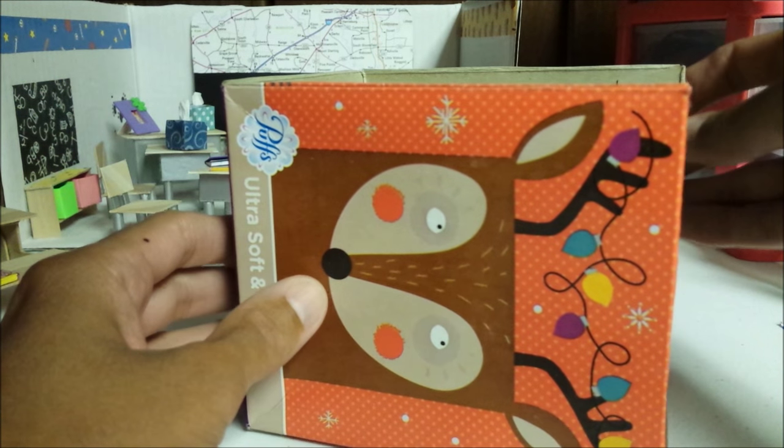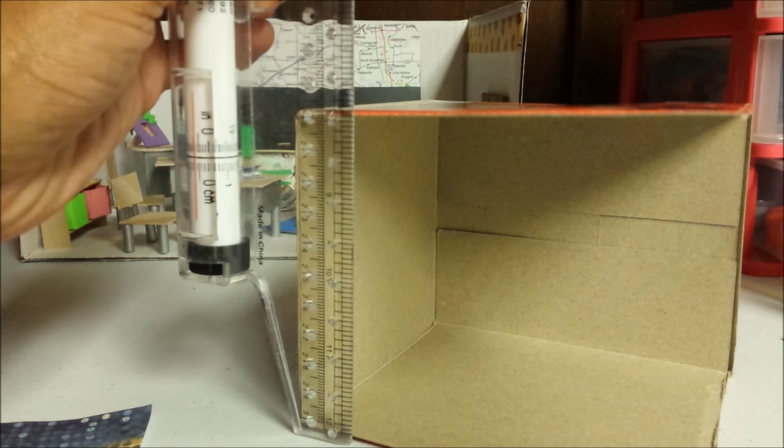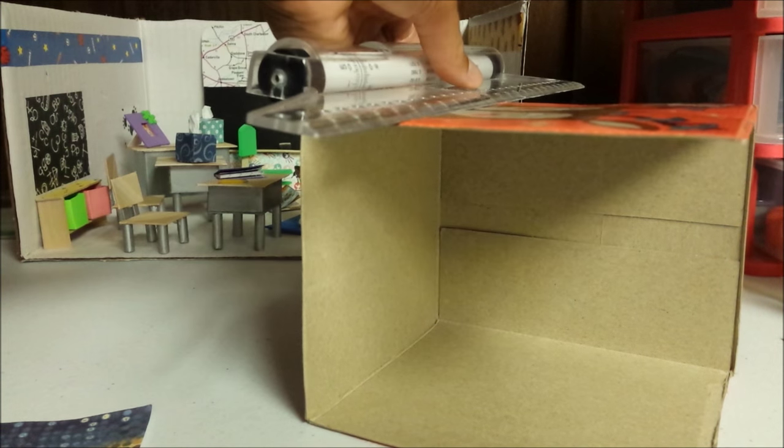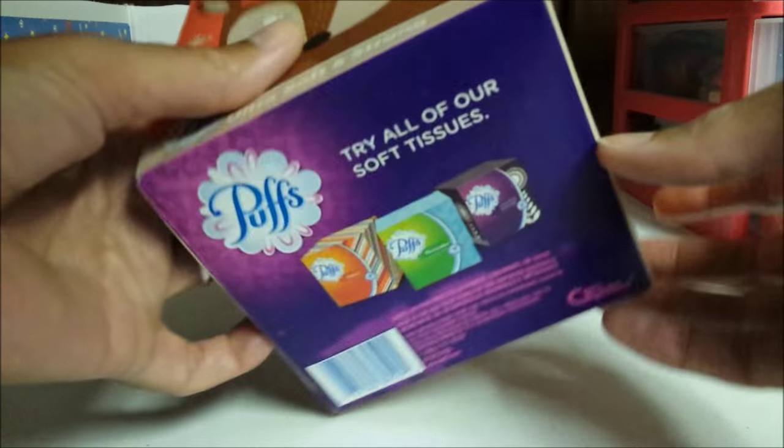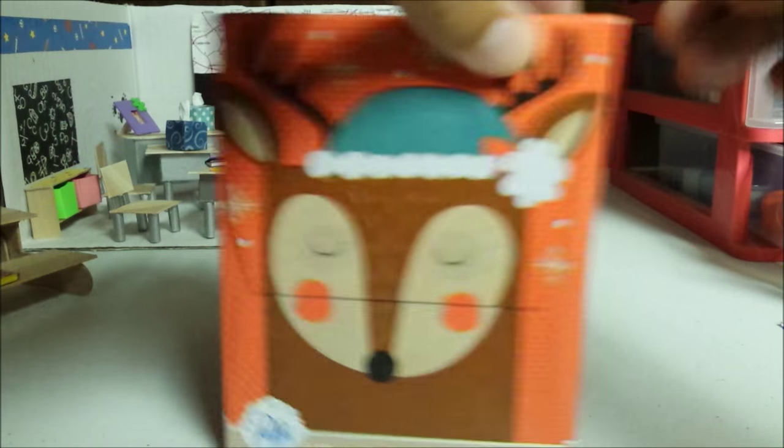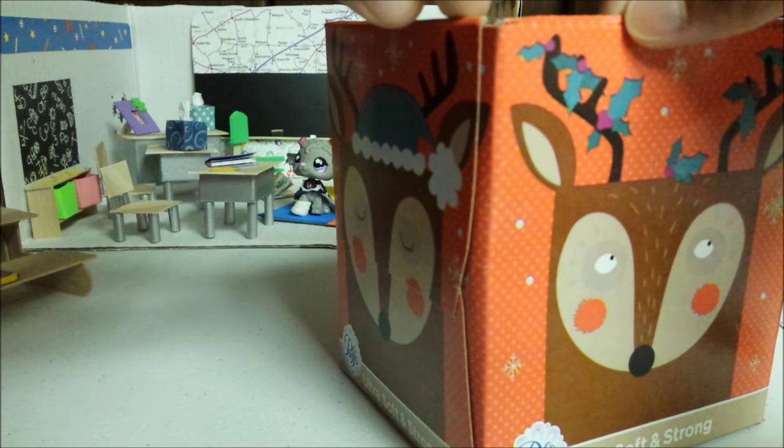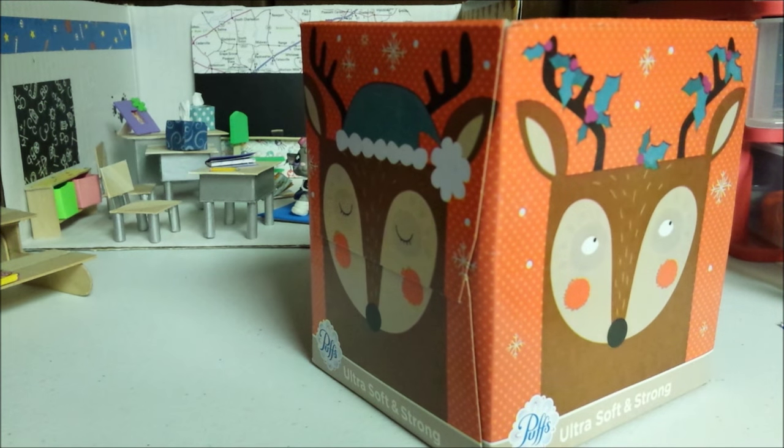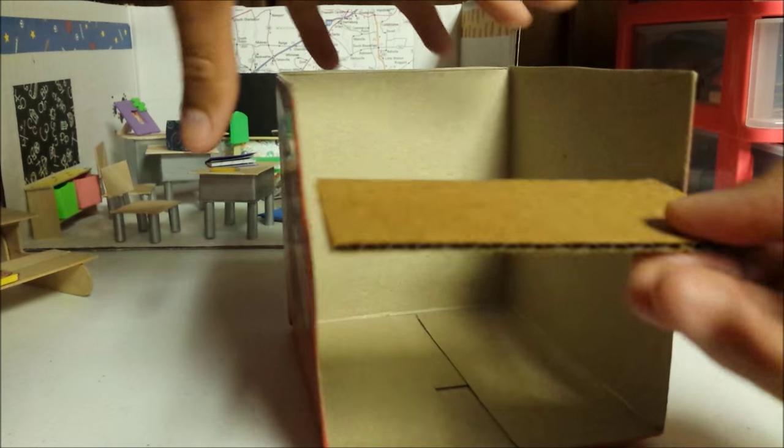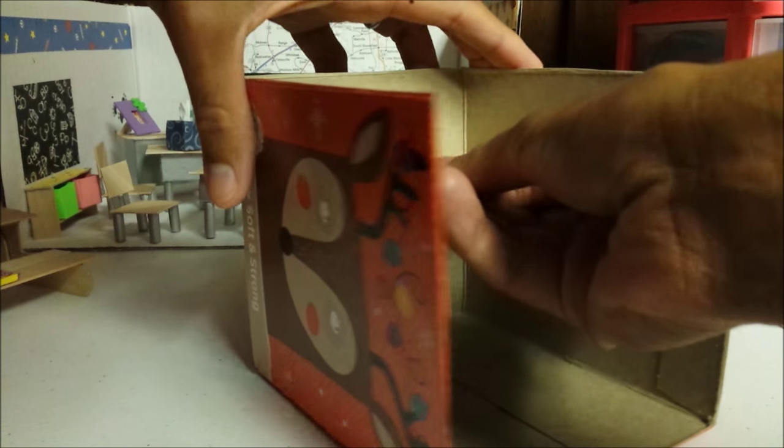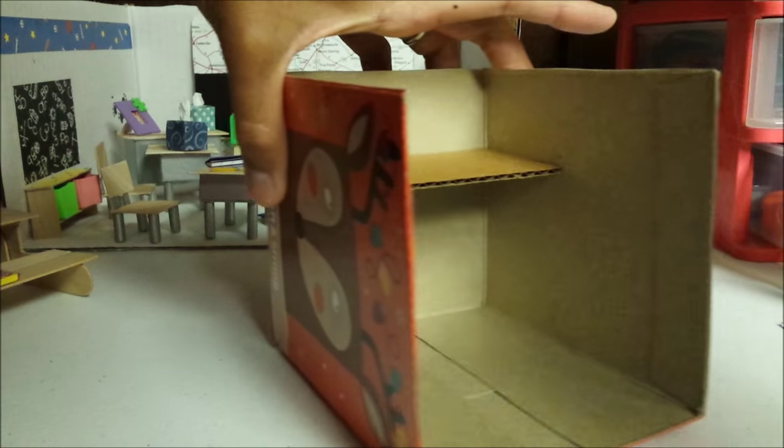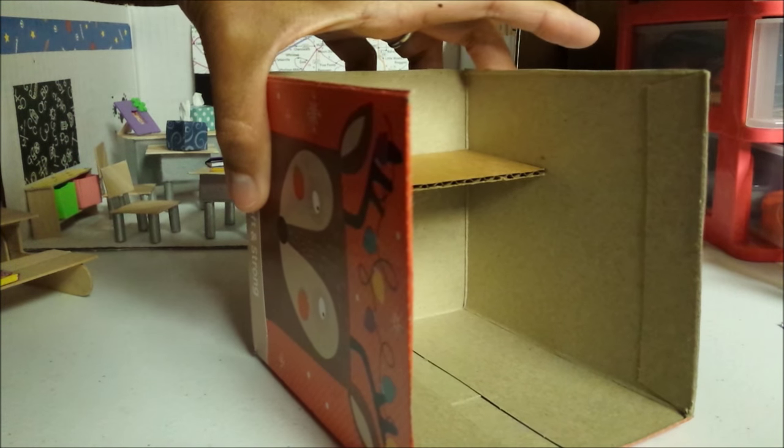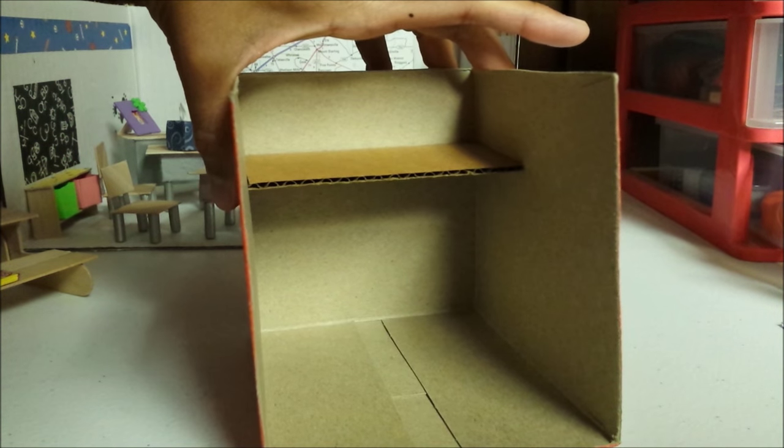Flip your box on its side. Measure your sides and cut out a piece of scrap paper to fit as your wall. Reinforce any areas that are coming apart with a little bit of tape. Cut out a piece of cardboard to fit as your loft bed and this will also help reinforce your side once glued in place.